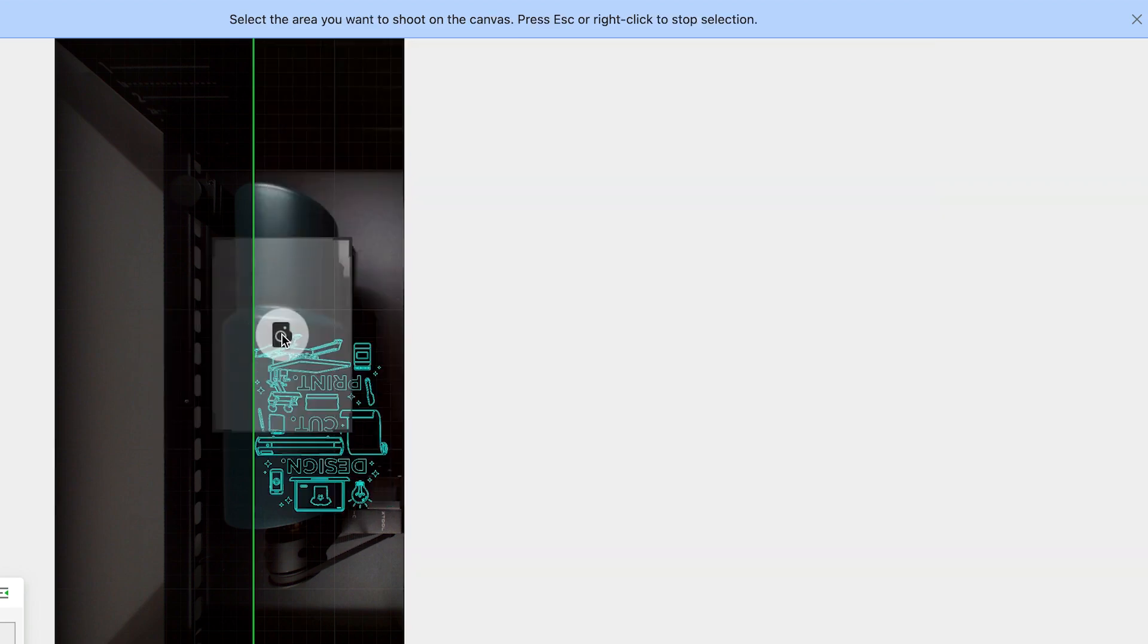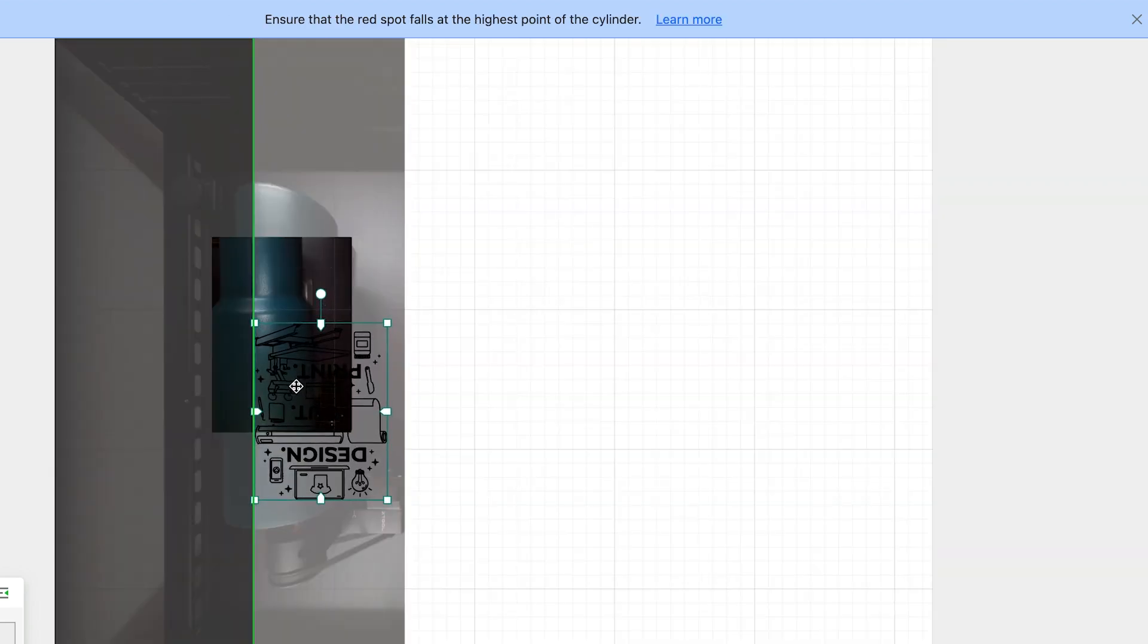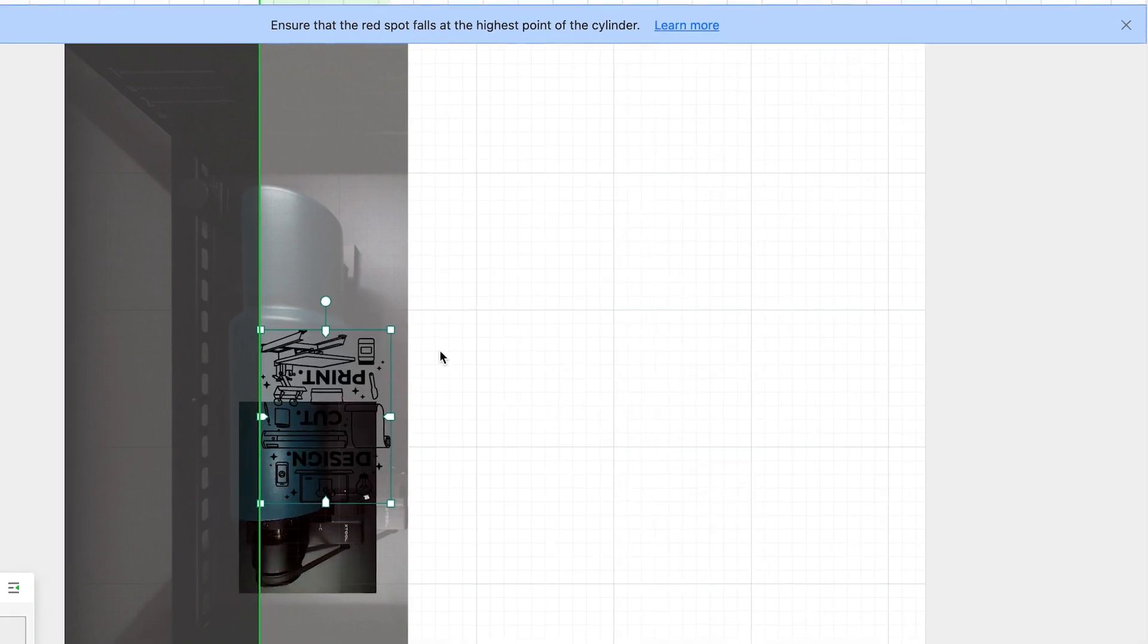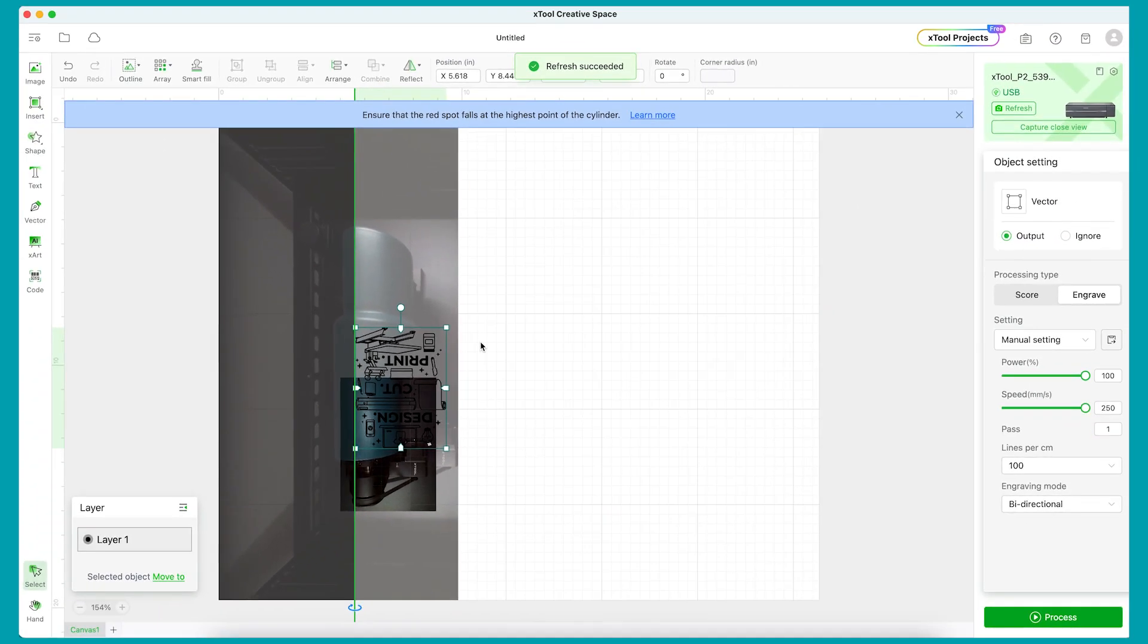Now we need to flip it 180 degrees and place it along this green line. With the P2, you have the option to capture a close up view. I do this so that I can make sure that the design is centered with this top section. With the design still selected, check this combine icon. If it's not grayed out like this, you should click the combine to join all of the pieces of your design together. This will speed up your engraving time a ton.